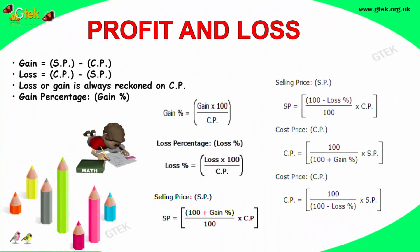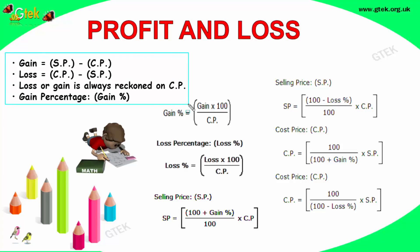This is the formulation you should understand and note it down. Gain is equal to selling price minus cost price. And loss is equal to cost price minus selling price. Loss or gain is always reckoned on cost price. The gain percentage is denoted as: gain into 100 divided by the cost price.